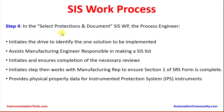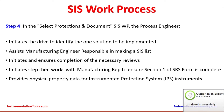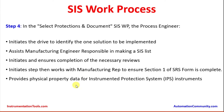In the fourth step — select protections and document — the process engineer drives the identification of the one solution to be implemented. There could be multiple solutions to mitigate one scenario, but the best one must be selected using minimum hardware instrumentation and mechanical protections to achieve the target. The process engineer assists the manufacturing engineer in making the SIS list, initiates and ensures completion of the necessary reviews, and works with the manufacturing representative to ensure section one of the SRS — Safety Requirement Specifications — form is complete. They also provide physical property data for instrument protection system instruments.